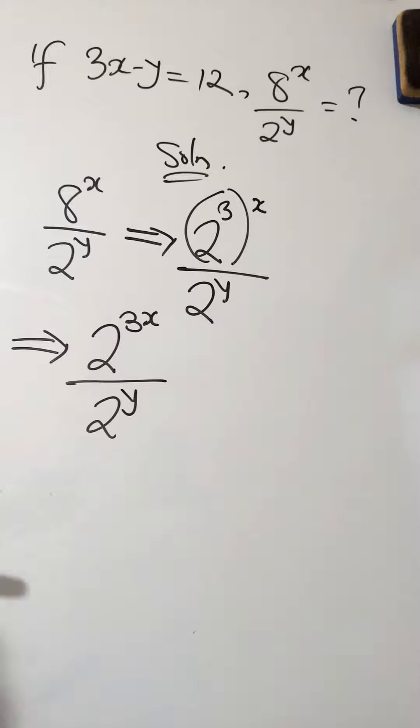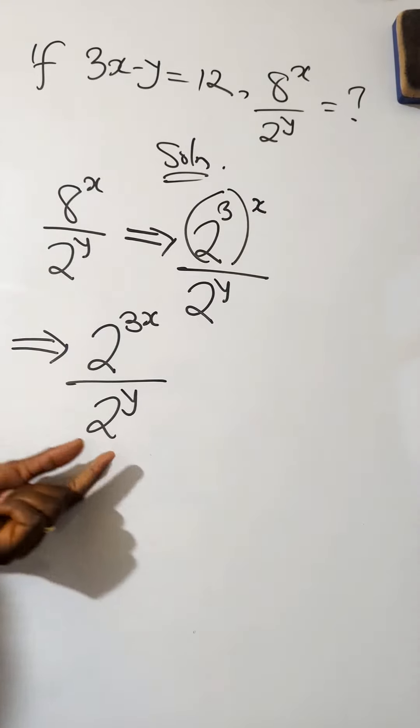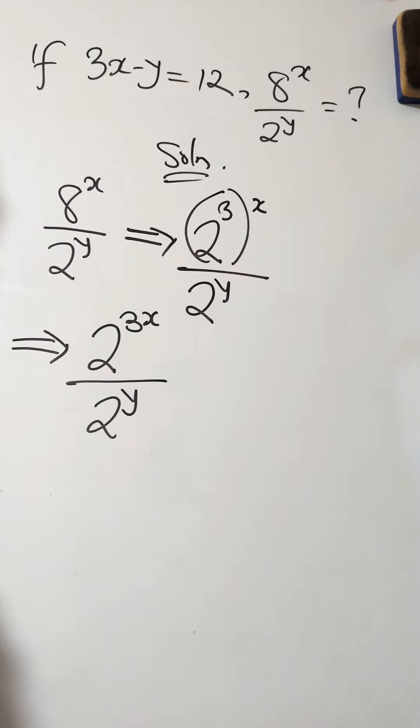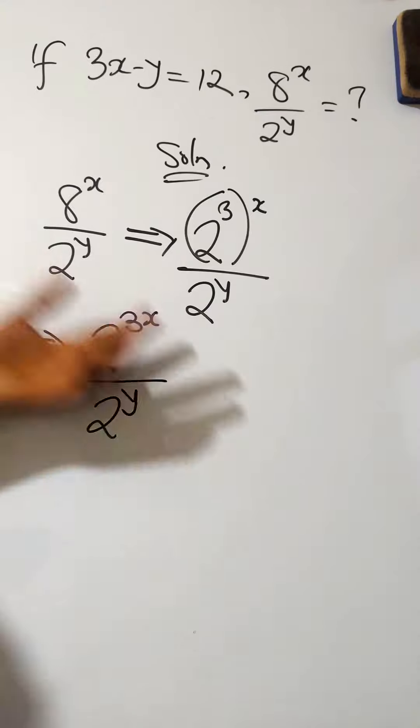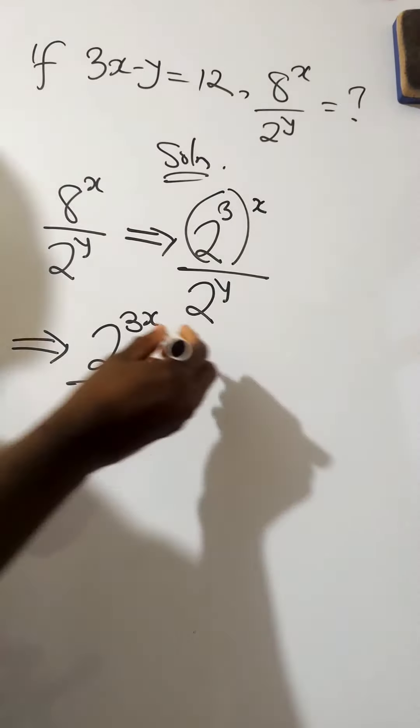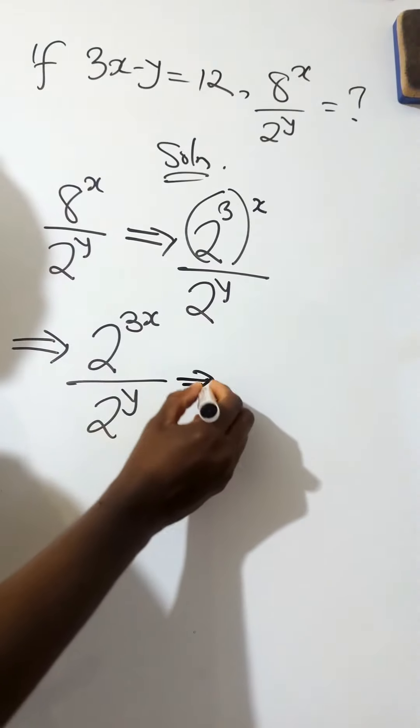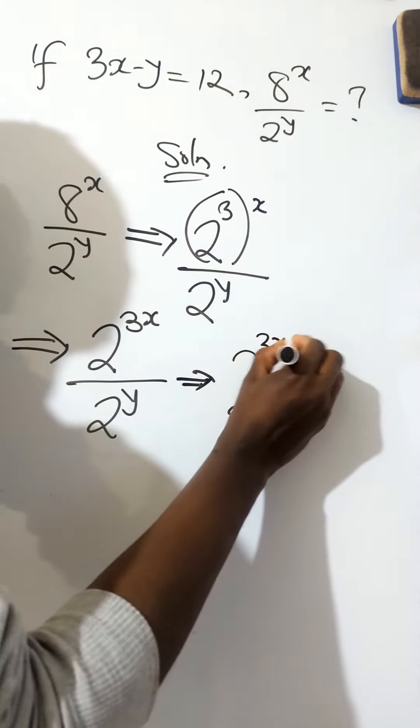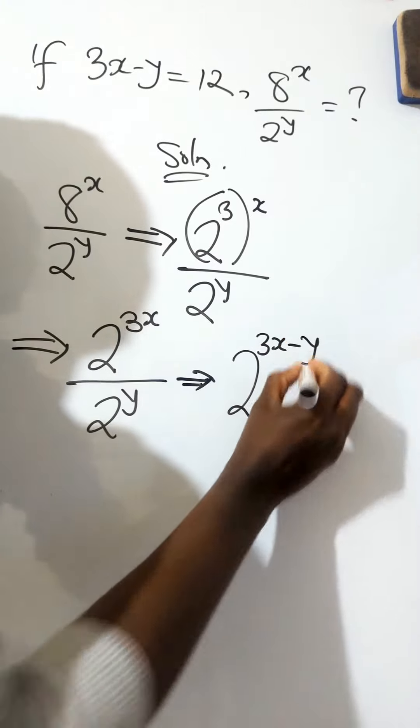Now, remember in indices, we've achieved the same base for the numerator and the denominator. The next thing to do is, when you have the same base and you're dividing, you subtract the powers. You just take one of the base and then subtract the powers. So, we'll take common base, which is 2, 3x minus y.